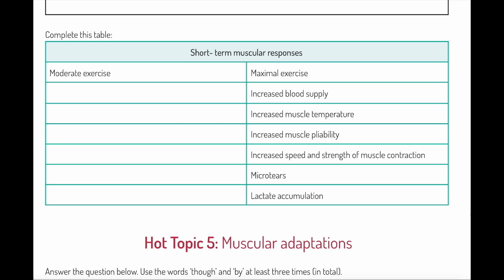Let's have a think about this table. We've got short-term muscular responses, moderate exercise versus maximum exercise. Notice the difference. We've got increased blood supply—does that happen for moderate exercise? It does, but can you see how that would be lesser than here, which would be more? Increased muscle temperature—we've got the same here. Yes, we've got increased muscle temperature for moderate exercise. Increased muscle pliability—yes, the same. This can be applied to both moderate and maximal exercise. Increased speed and strength of muscle contractions—yes, it's the same.